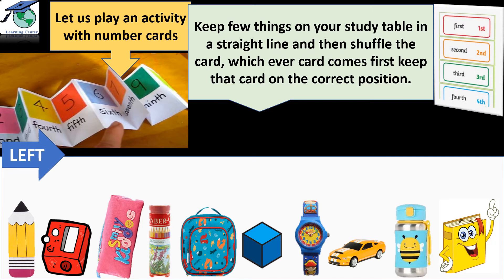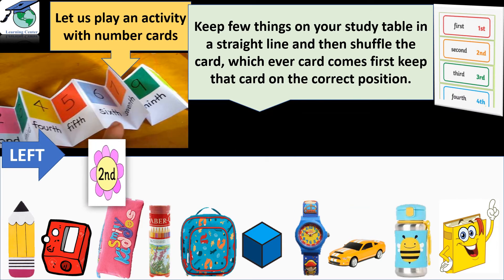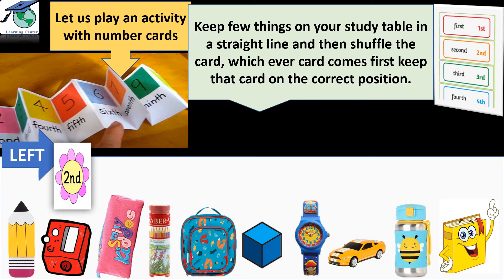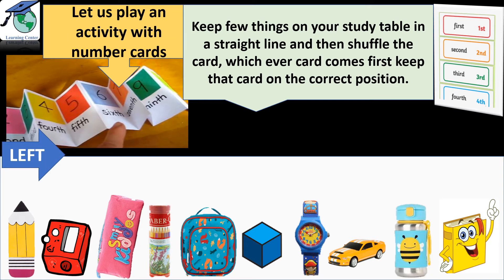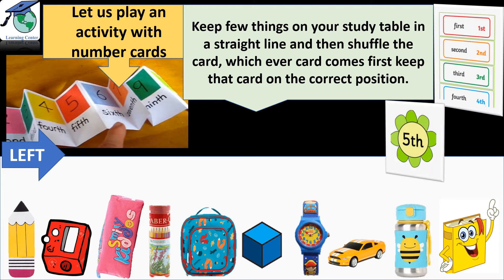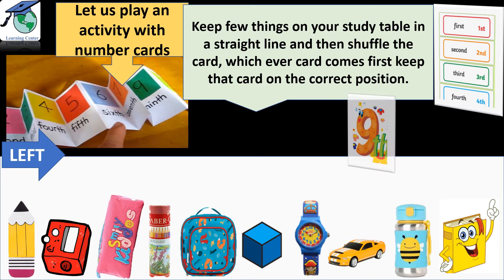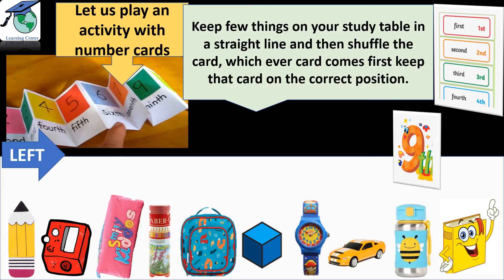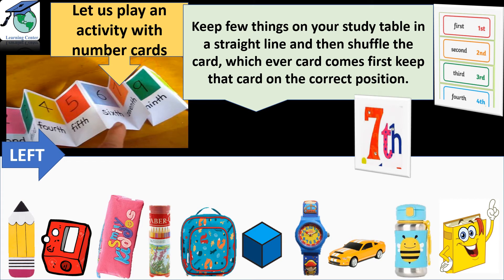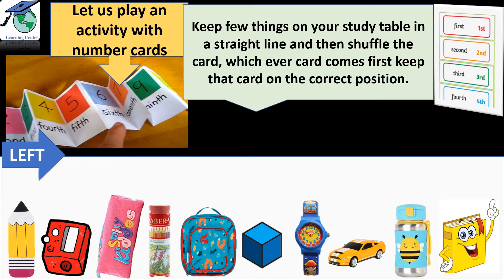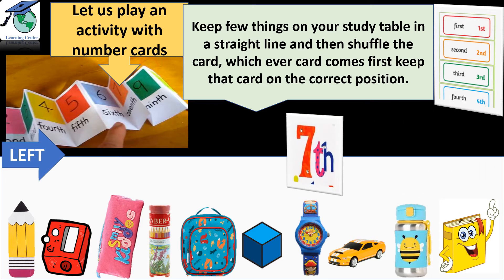Now you will shuffle the cards. Whichever card comes first, you are going to put that card on the top of the correct object. For example, if you get the card second, then you will place it on the top of the sharpener. If you get the card fifth, then you will place it on the top of the lunch bag. If you get the card number ninth, then you will place it on the top of the water bottle. If you get the card with number seventh, so where are you going to place it? Yes, you are going to place it on the top of the watch.